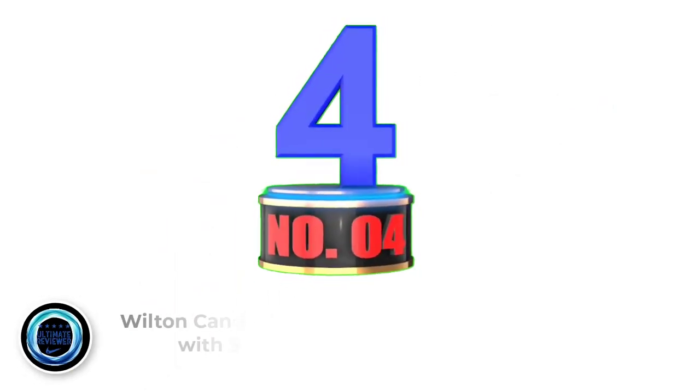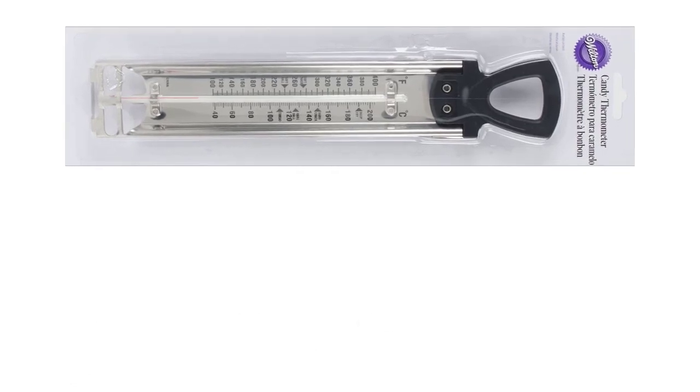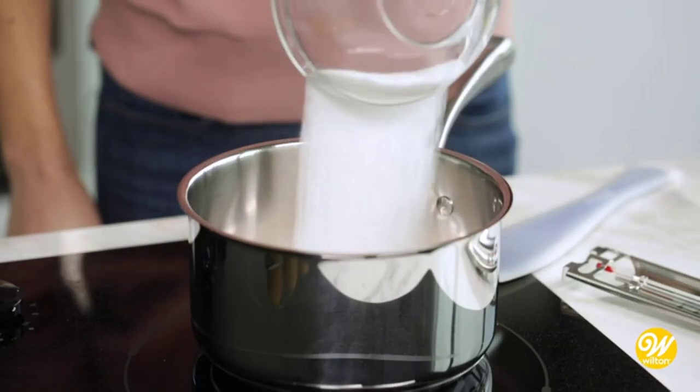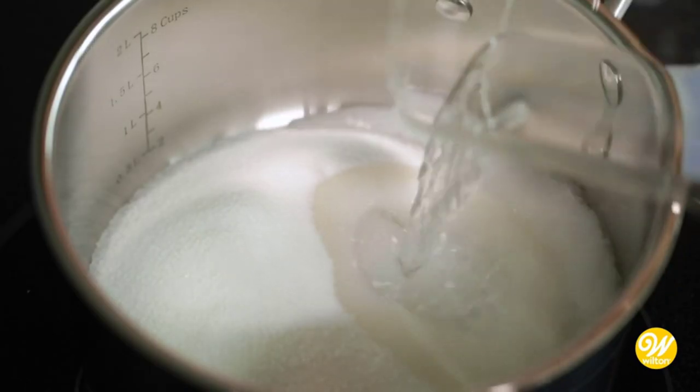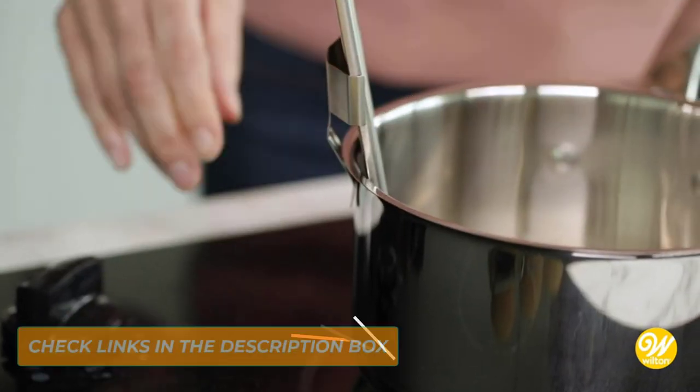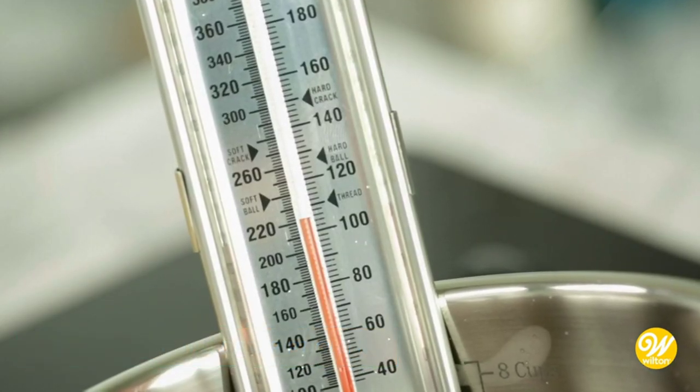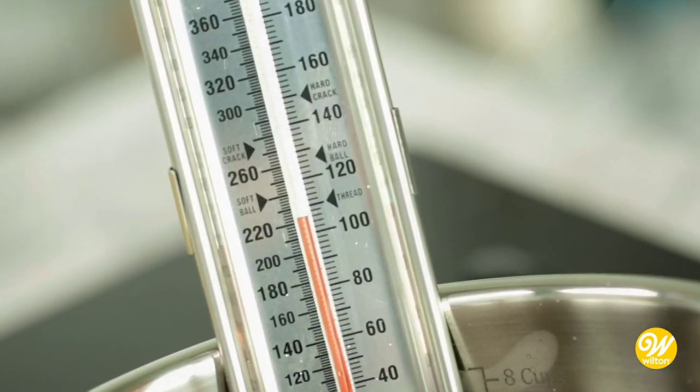Number 4: Wilton Candy Thermometer with Side Clamp. Are you looking for a thermometer that is especially versatile? The Wilton Candy Thermometer is designed to be used in a wide range of different ways. It promises to be very easy to use and clean. Because this is a traditional thermometer, there are no batteries to replace. This model does not require calibration and is easy to store when not in use.